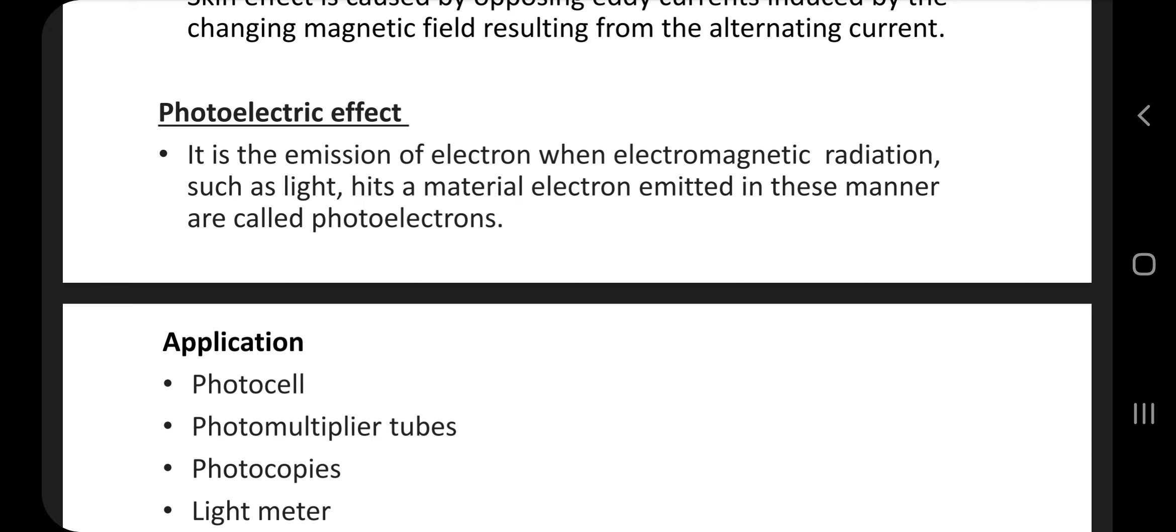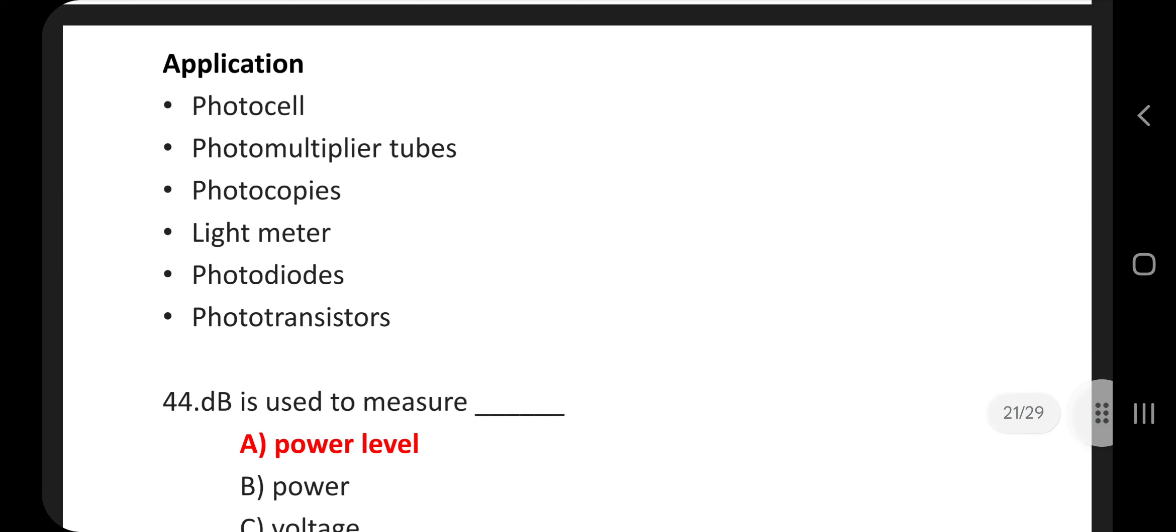What is photoelectric effect? It is the emission of electron when electromagnetic radiation, such as light, hits a material. Electrons emitted in this manner are called photoelectrons. Application: photocell, photomultiplier tubes, photocopies, light meter, photodiodes, phototransistors.